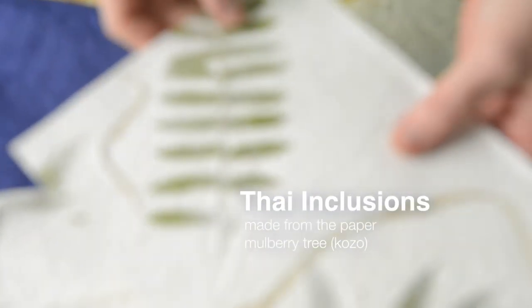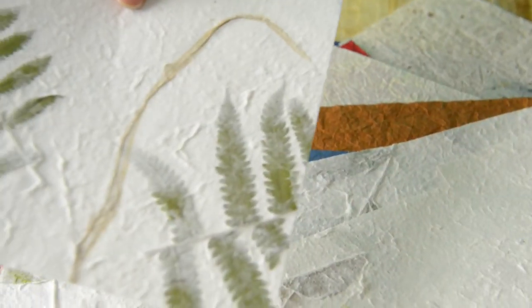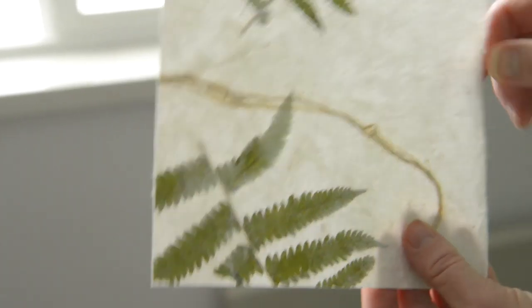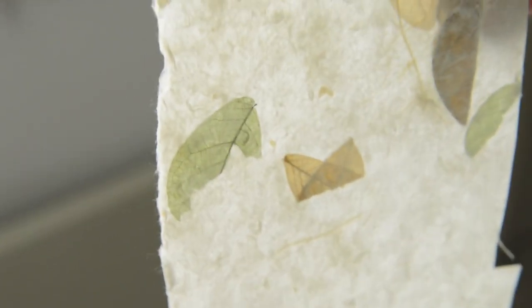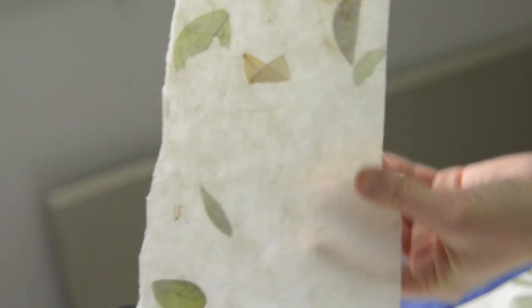This is also paper from Thailand and it's called inclusion paper. This inclusion is because it has different petals or natural things in it. This is just a fern. When you're using this paper, it comes with this natural deckle on the edge and a lot of people ask me how to get that natural deckle to stay on to their paper and their boards when they're using it in their work.